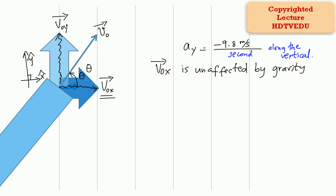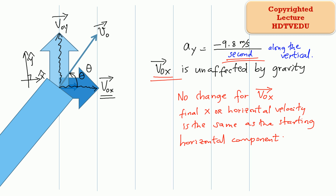That's how much your velocity vector is going to change every second. The y component of the velocity vector is going to change by negative 9.8 meters per second per second. The horizontal component of the velocity vector is unaffected by gravity — that means there is no change, no change for the velocity along the horizontal.